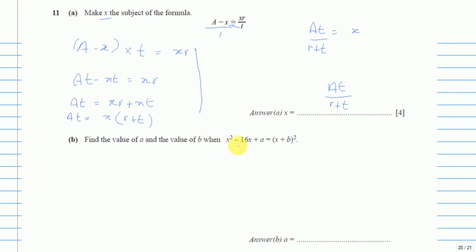Part (b): find the value of a and the value of b when x² - 16x + a equals (x + b)². You can see this is a quadratic equation transformed into (x + b)² form. Quadratic equations in your syllabus can be solved by factorization or formula.